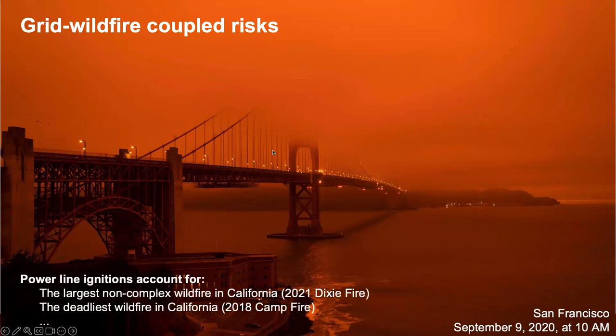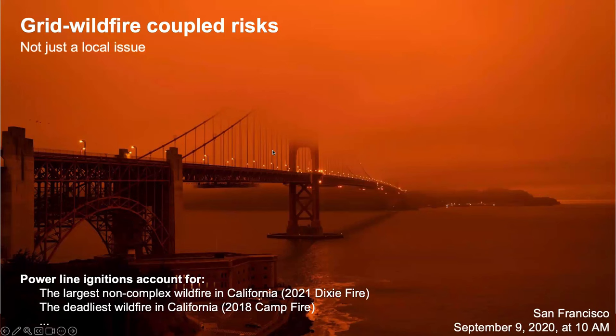In California's history, the largest and the most deadly wildfires both involved power line ignitions. And because our electric grids are interconnected systems, a local system fault like a local power line ignition can have non-local impacts, because the failure can cascade across the interconnected systems. And also since we share the same atmosphere, wildfires caused locally can also impact people far beyond the locality.